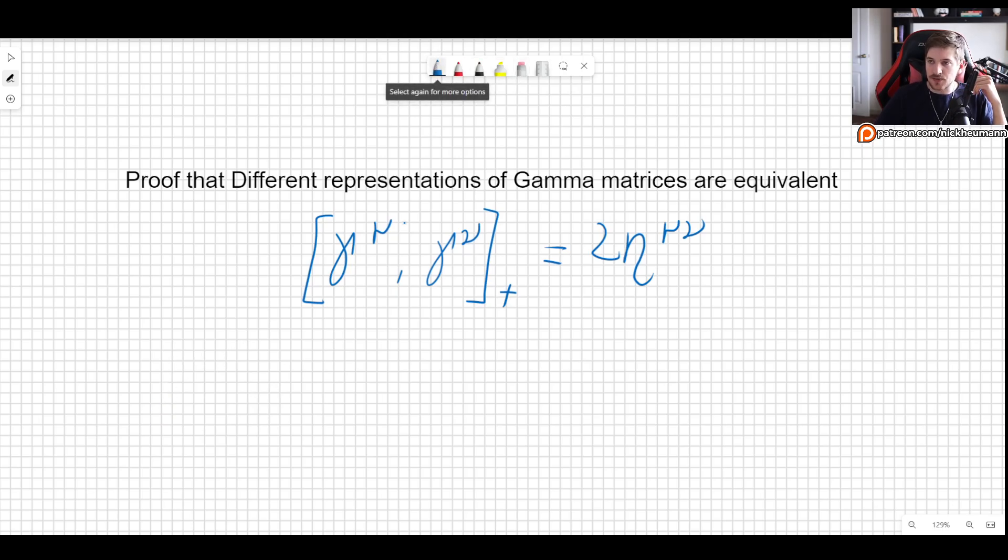Something that is very important is that we have to understand what we really mean when we are talking about different representations. So if we have one way of writing down the gamma matrices and also another one, we have to have a way of going from one to the other. And we will do it by using this transformation matrix S, which is going to be unitary.